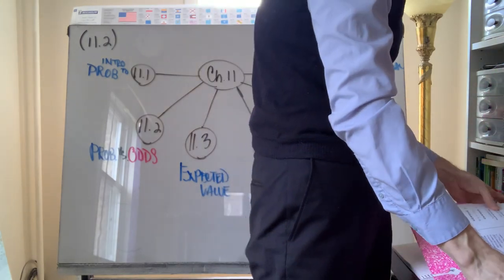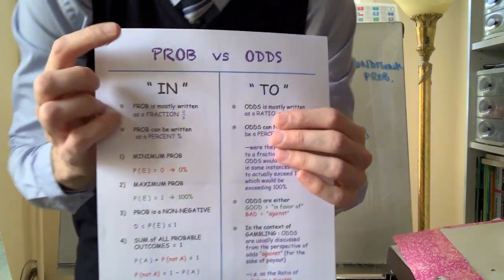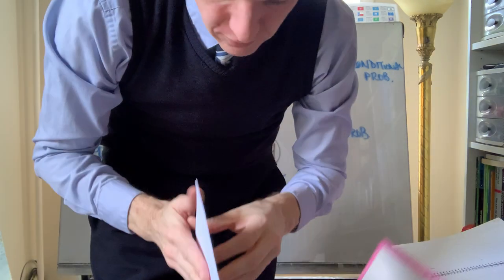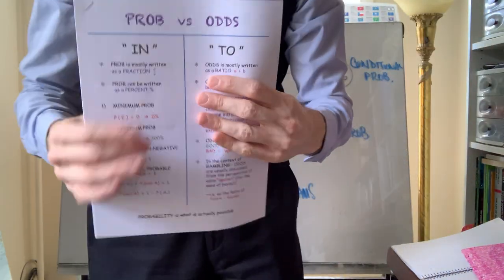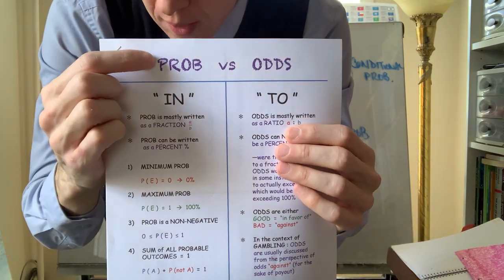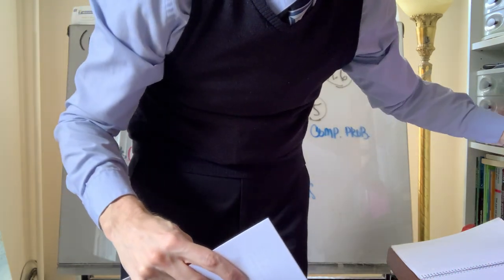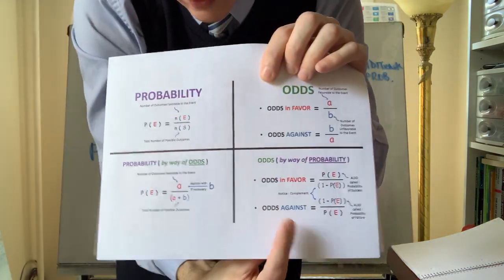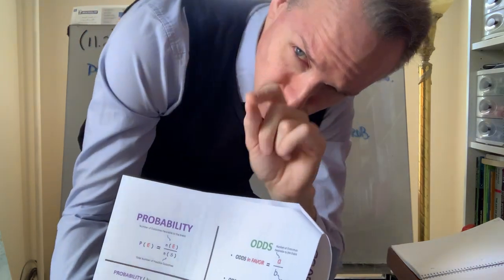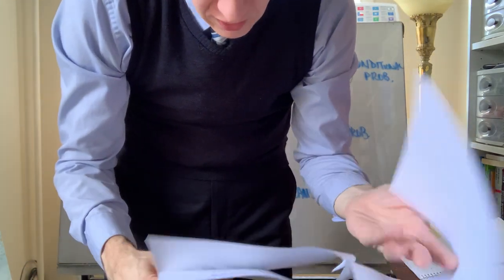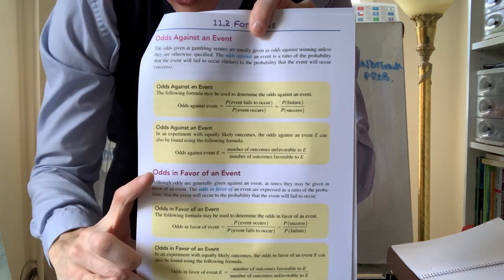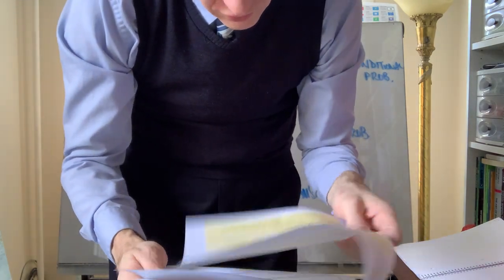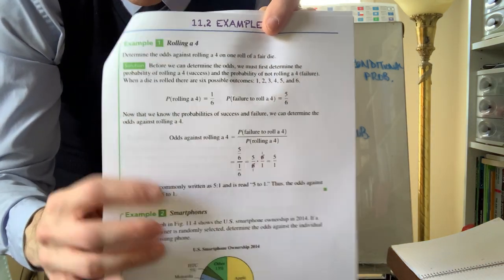The packet I have for you consists of these pages. This is a more beneficial printout. This is a comparison between probability and odds. This is a formula sheet — different formulas you could use for this section. I'm going to add one thing to this that might be helpful. Here's a copy of the same information swiped from the textbook and put onto one page, insofar as formulas are concerned. And then these are the examples — we'll go through these with the solutions available.